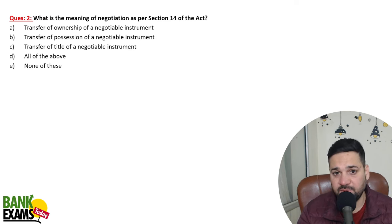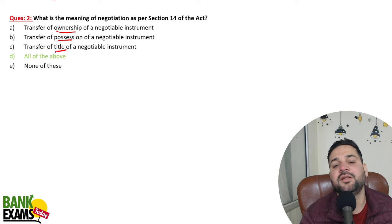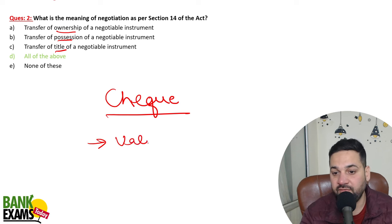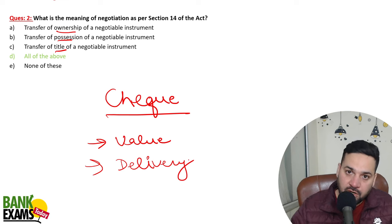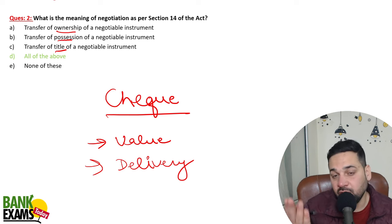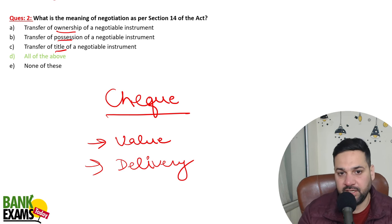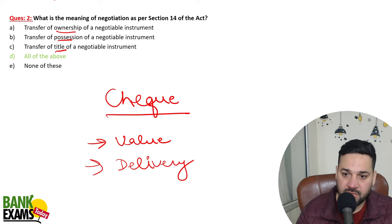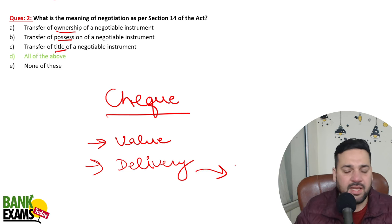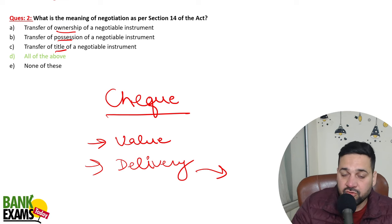What is the meaning of negotiation as per Section 14 of the Act? Negotiation means the transfer of ownership, possession, and title. For example, if I buy chairs from you and give you a cheque, I have delivered the cheque — you are the owner and have the right to claim money. You can further negotiate it to your supplier. So all of the above — ownership, possession, and title — are correct.